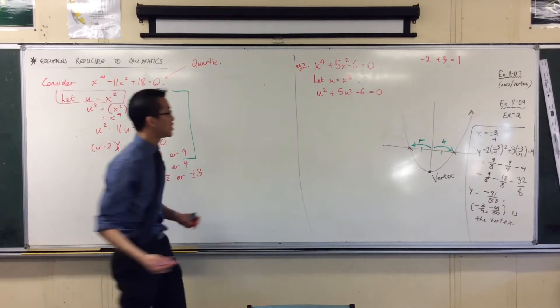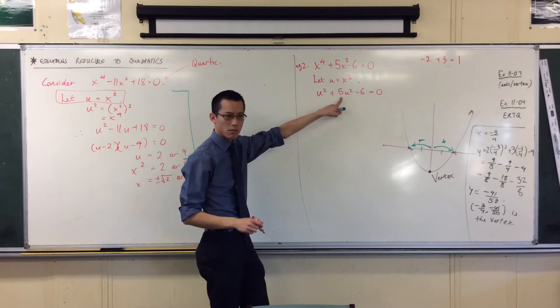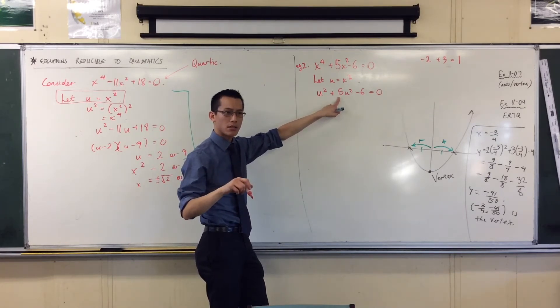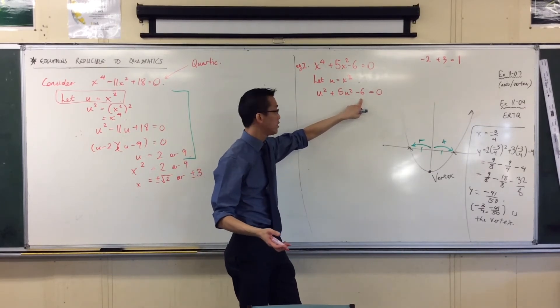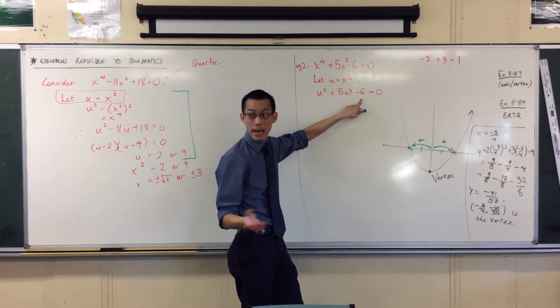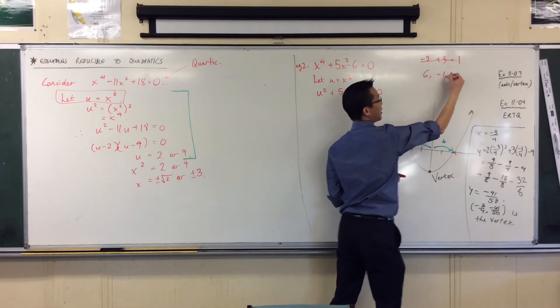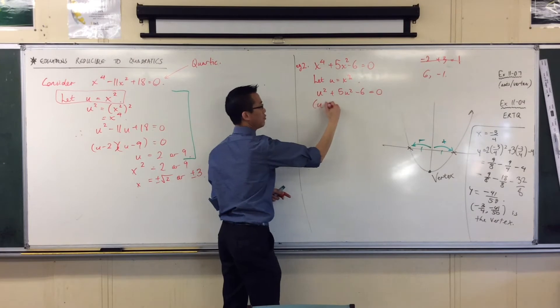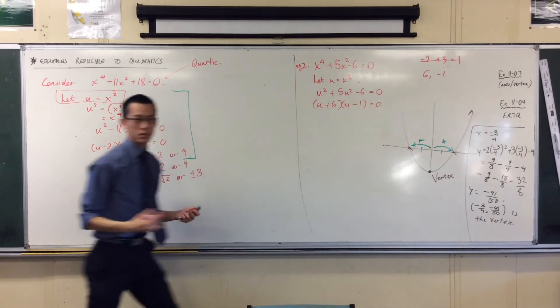6 and minus 1. Well, 6 and minus 1 do it for me. When you add them, 6 plus negative 1, do you get 5? You do. And when you do 6 times negative 1, do you get minus 6? Yeah, you do. It checks out. So therefore, I'm going to go 6 and negative 1, so I get u plus 6, u minus 1 equals 0. Are you happy with that?